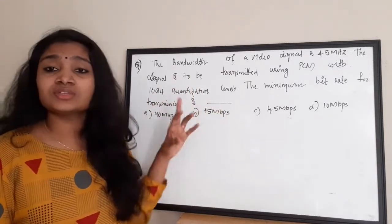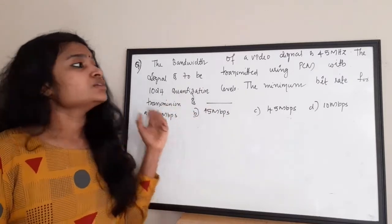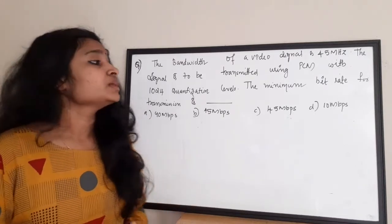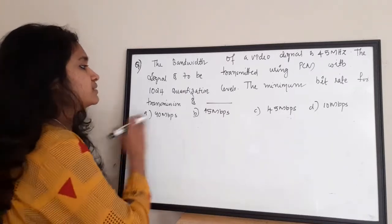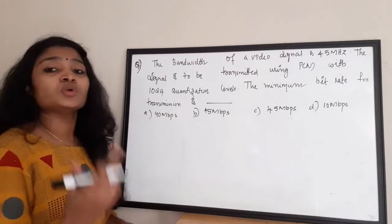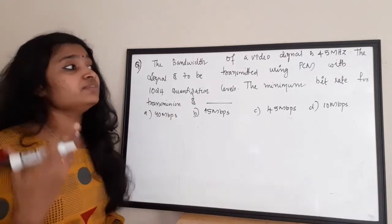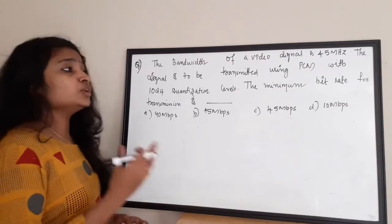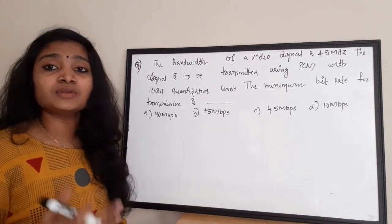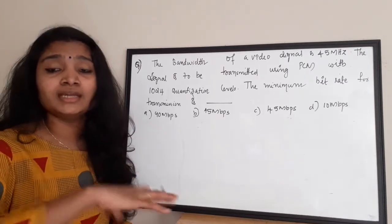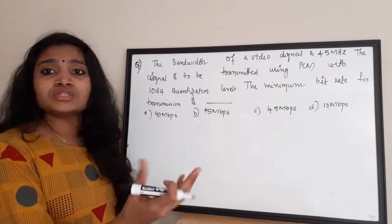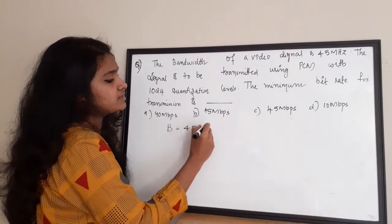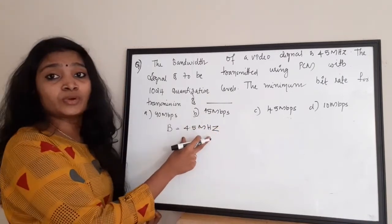This signal is being transmitted using pulse code modulation or PCM, which is a digital transmission technique. They are asking for the minimum bit rate for transmission. In order to pulse code modulate the signal, we need to first sample the signal and digitize it. For sampling, the criteria is that we should follow the Nyquist criteria in order to perfectly reconstruct the original signal.